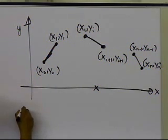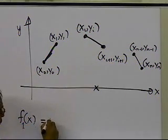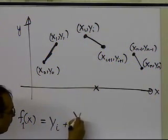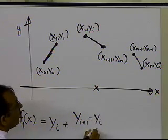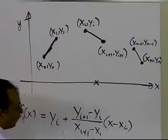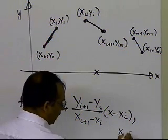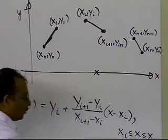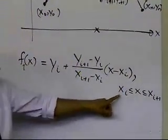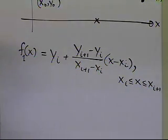If I write a general formula, the function f1 of x — standing for linear spline — for the spline between x of i and x of i plus 1, will be: y of i plus (y of i plus 1 minus y of i) divided by (x of i plus 1 minus x of i), times (x minus x of i). That's the equation of the straight line between two data points, and this spline is only valid between x of i and x of i plus 1.